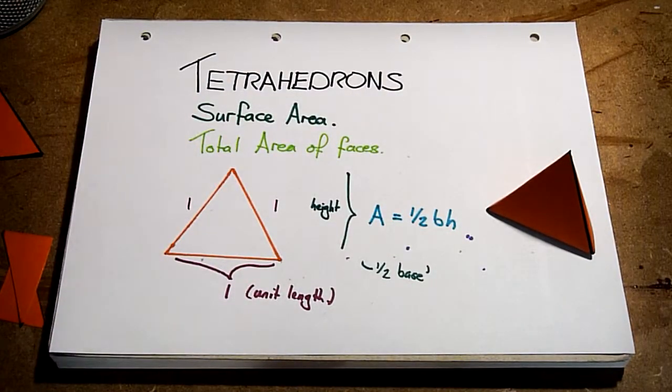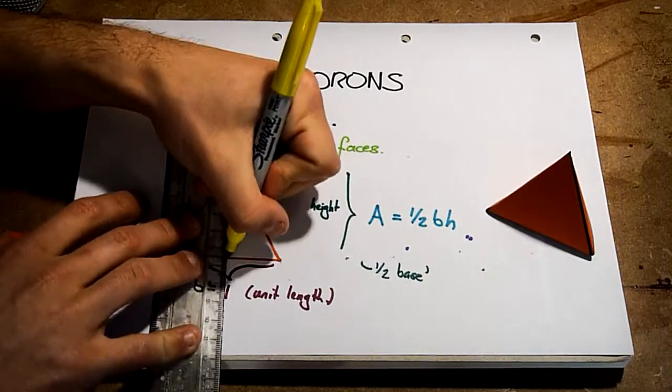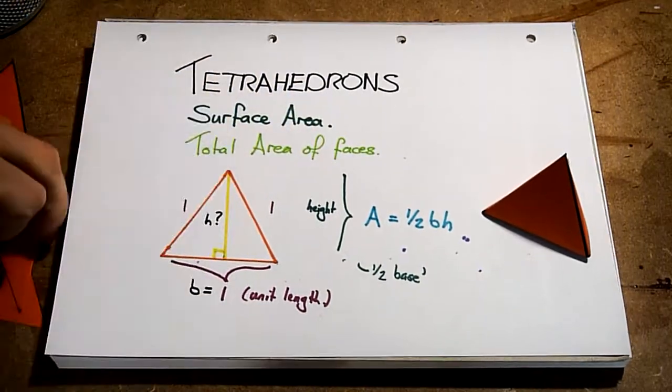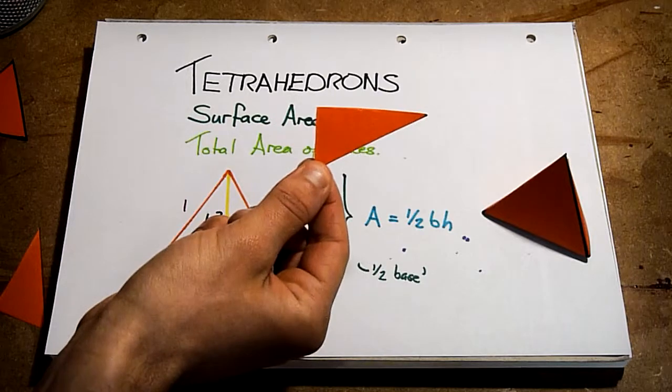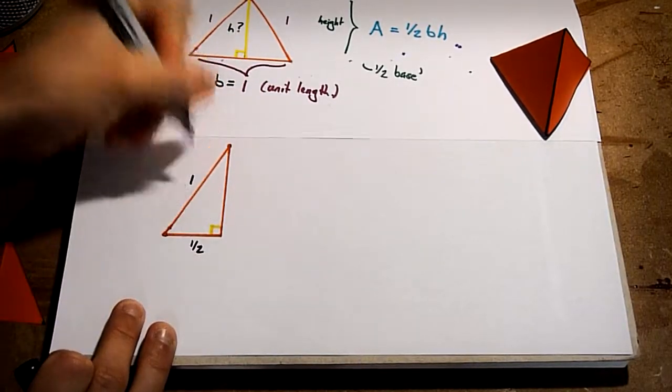But what is the height? It's not 1. That's the side length. If we draw a line perpendicular to the base up to the top, and then only consider the left-hand side, we have a right-angled triangle, where the height of our equilateral triangle is now one of the sides.